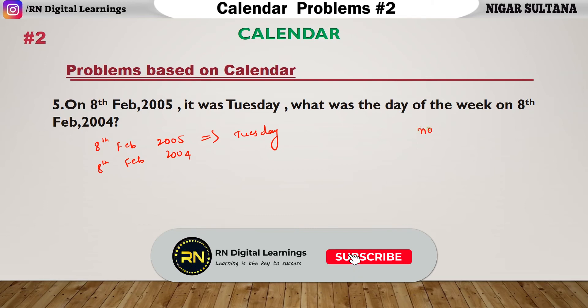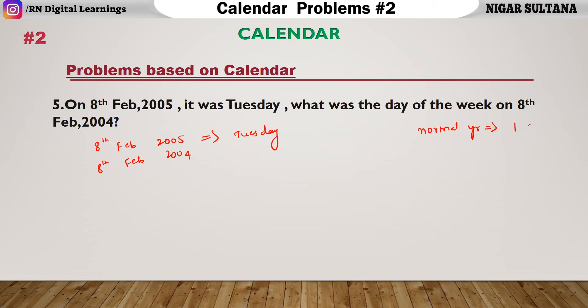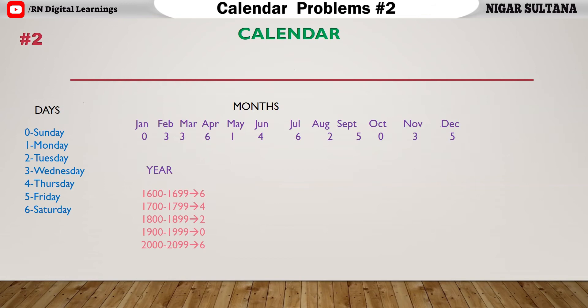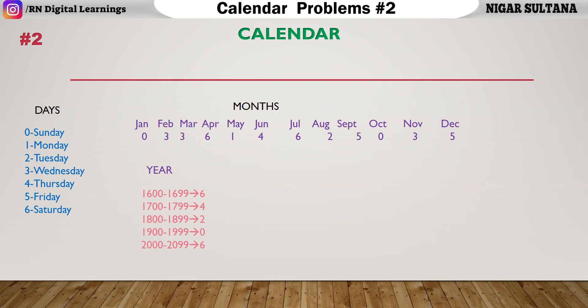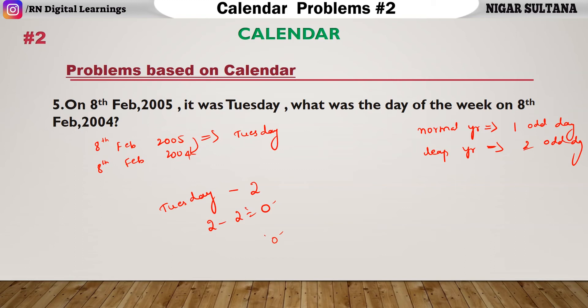This 2004 is a leap year. For a normal year, there will be 1 odd day. For a leap year, there will be 2 odd days. They are talking about the previous year of this 2005, so previous year in the sense, minus 2. Because 2 means it is a leap year. We are going to subtract this minus 2 from Tuesday. The Tuesday is 2. Now, 2 minus 2 is 0. What does 0 indicate in days? 0 means it is Sunday.